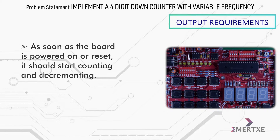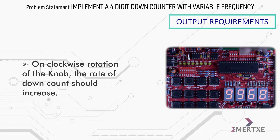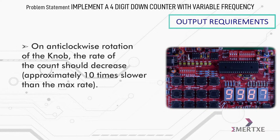As soon as the board is powered on or reset, it should start counting and decrementing. The rate of the count should be based on the current position of the potentiometer knob. On clockwise rotation of the knob, the rate of down count should increase. On anti-clockwise rotation of the knob, the rate of count should decrease, approximately 10 times slower than the max rate.